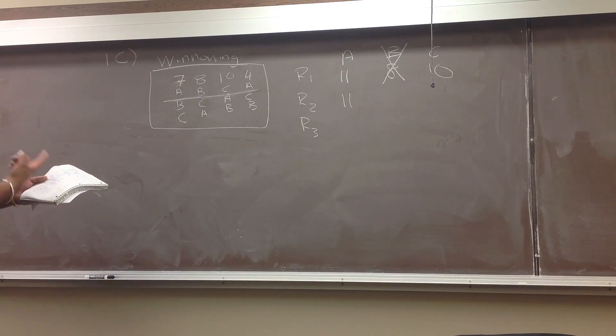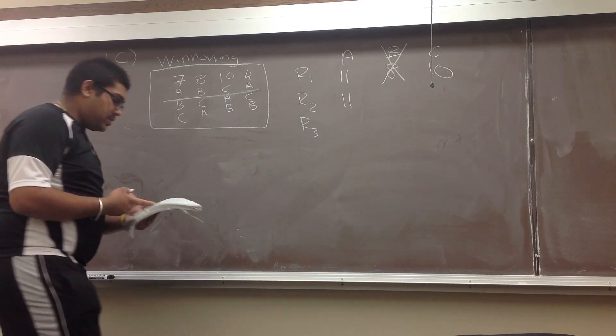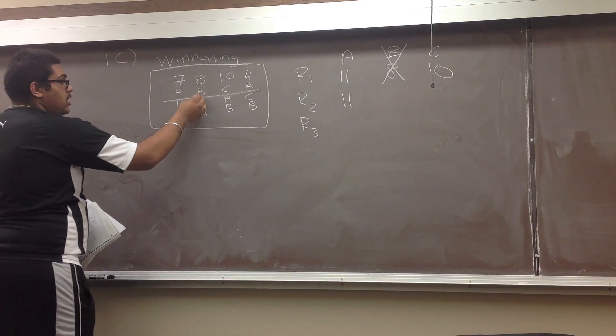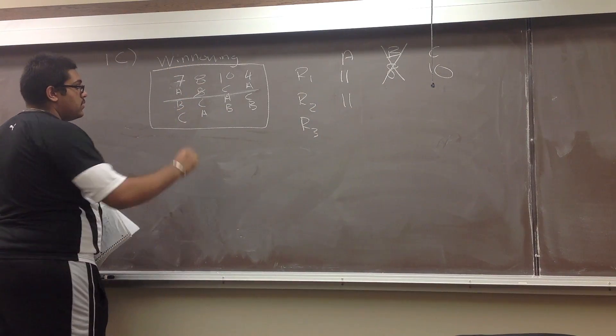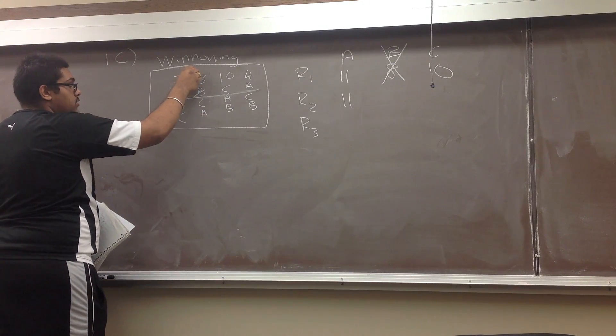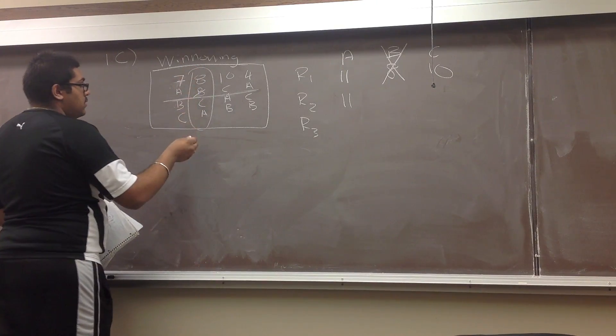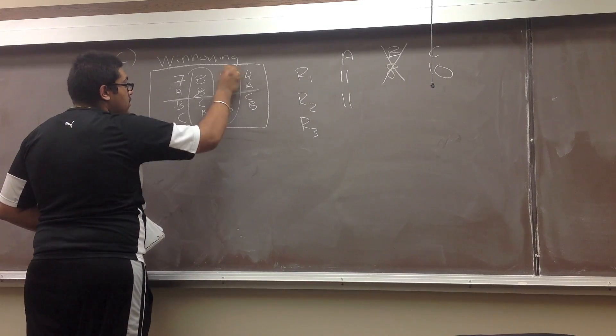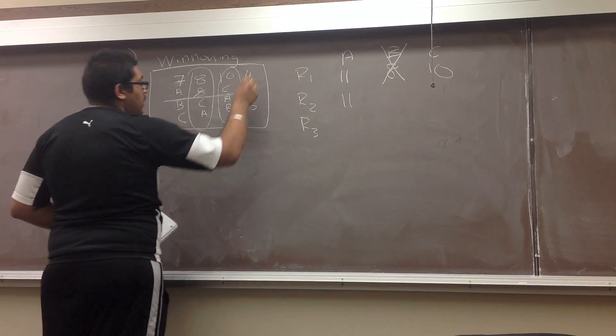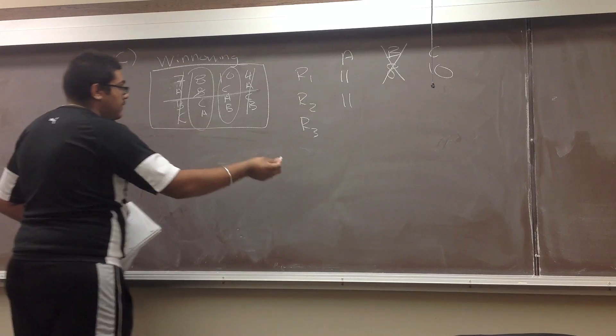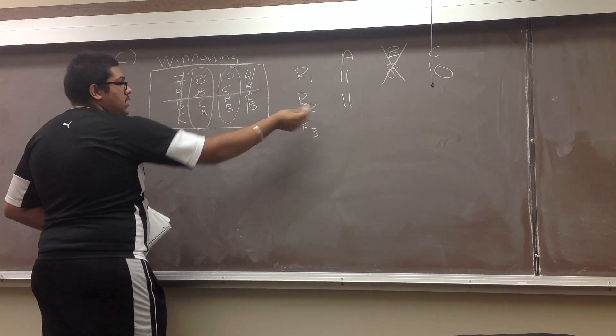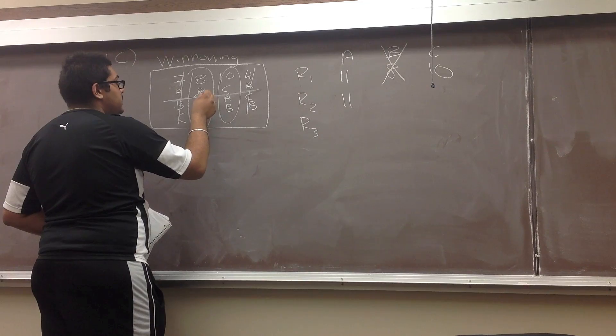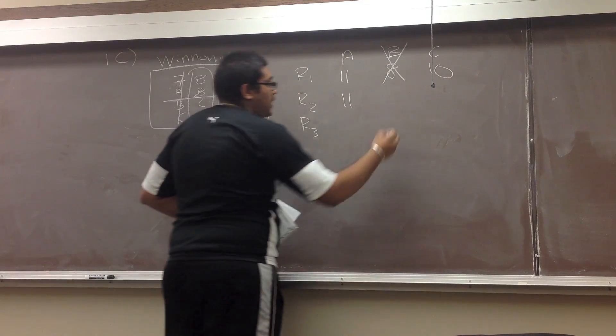And then C has, because B has been eliminated, B cannot be chosen here. So C is over eight, so they gain an extra eight here. And C automatically had ten before. And because we've already used four and seven for the eleven, C gains the popularity of load over B, because B has been eliminated. So eight plus ten is eighteen.